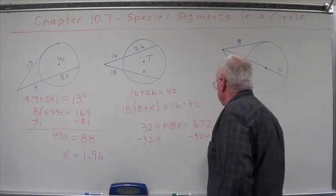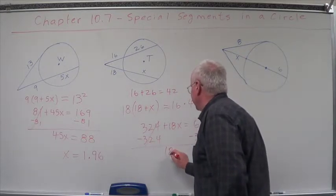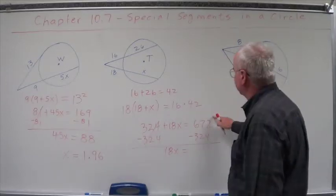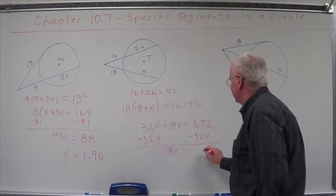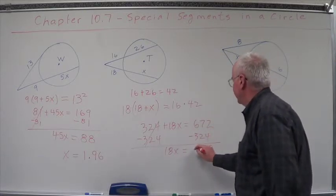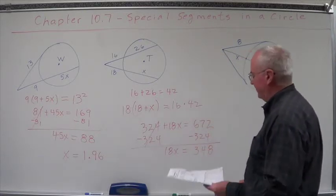We get 324 plus 18x equals 672. We're going to subtract the 324 from both sides. We're left with 18x equals 348.